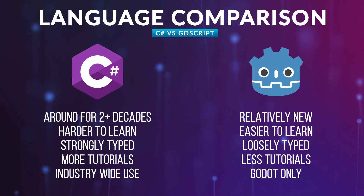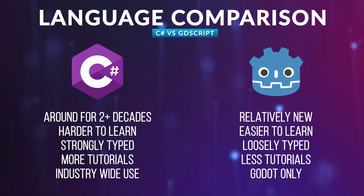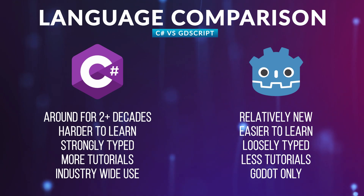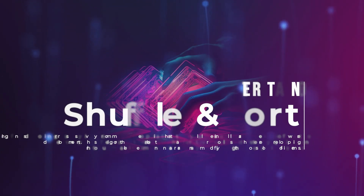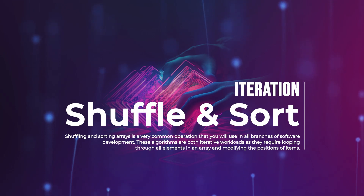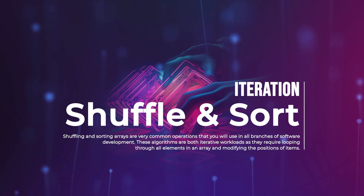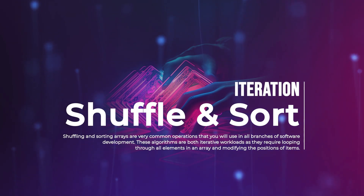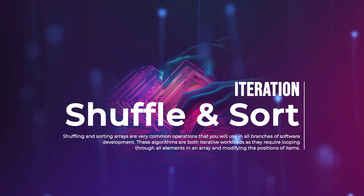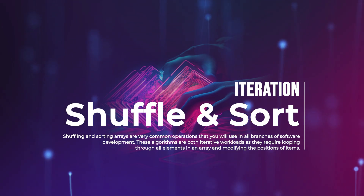Now that we have a basic understanding of the differences between these two languages, let's get right into some performance tests and see how they compare. The first workload we're going to look at is iteration. How quickly your code can iterate and modify a collection is very important. We'll be using shuffle and sort algorithms to test this.